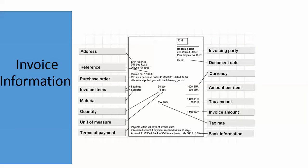This is the information that can be included in the invoice: address, purchase order, invoicing party, currency, tax rate, bank information, and material quantity.